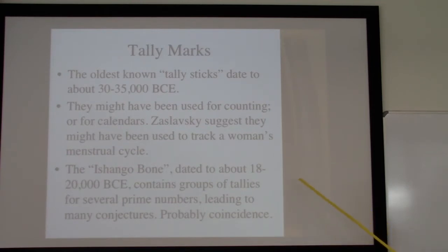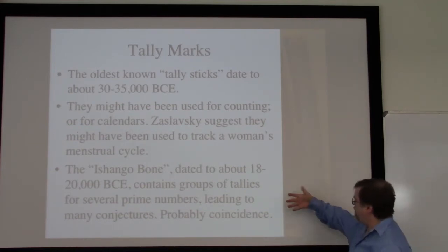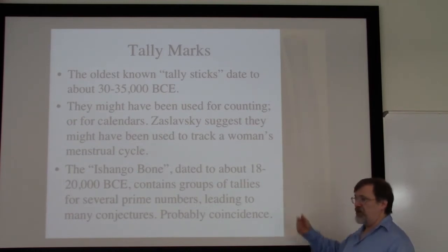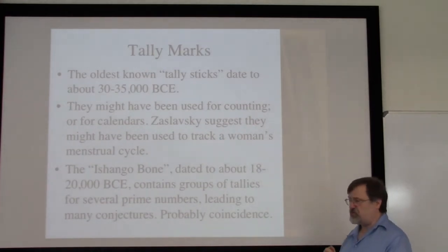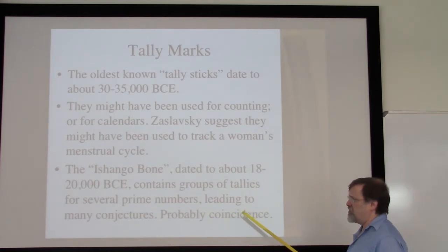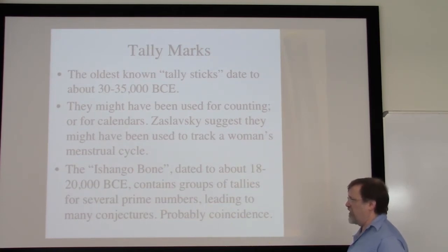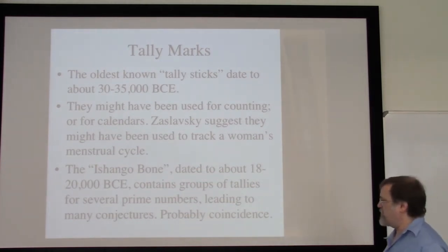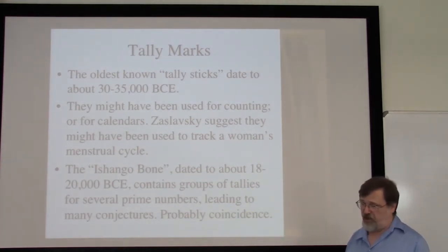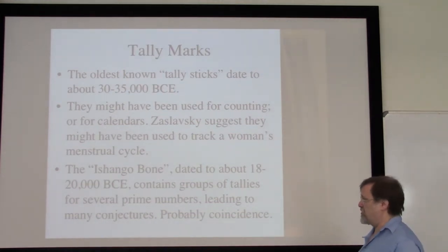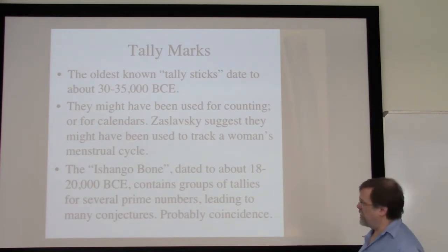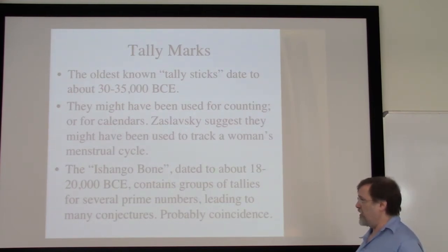One of the odd things about the Ishango bone is that there's an awful lot of tallies, and the groupings include things like five marks in a row — five being a prime number — and then 11 and 13, with a surprisingly large number of prime numbers. That has led to wild speculative conjectures about these people playing around with prime numbers. One of the number groups here is nine, and nine is certainly not a prime, so maybe they were just interested in odd numbers.